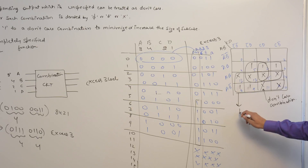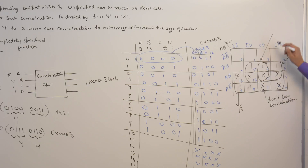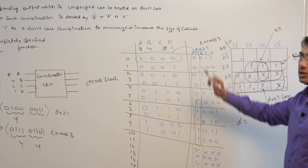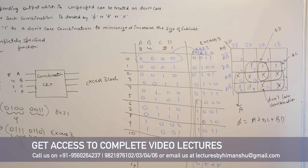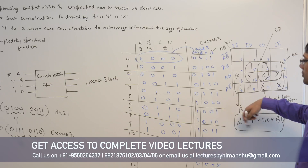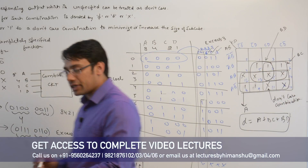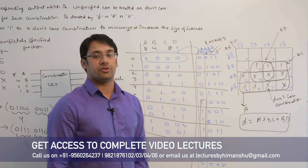The largest subcube represents the term A. Another subcube represents BC, and another represents BD. Therefore for variable small d, the minimized switching expression is: d = A + BC + BD. In the same way, switching expressions can be derived for the other output variables. This is how don't care combinations are used, and we can assign any value — 0 or 1 — to don't care combinations.